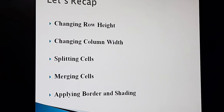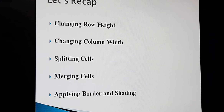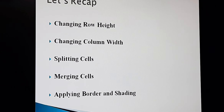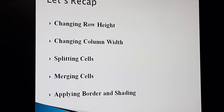Now let's take a quick recap of what we learned today. Today we learned: changing row height — how to change the height of a row; changing column width; splitting cells — how to divide a cell into a number of cells; merging cells — how to convert a number of cells into one cell; and how to change the appearance of a table through applying border and shading. I am also going to show you how to do all these things practically in this video, so watch carefully so you can do it easily.